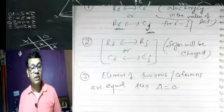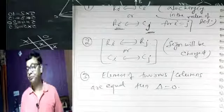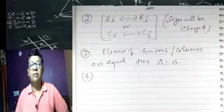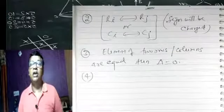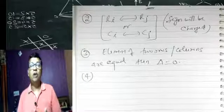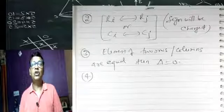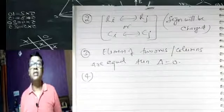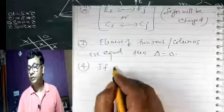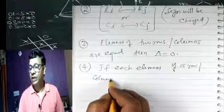Ab property number 4 se hum log start karenge. Teen properties aaj humne padhiyin, next hum log saare properties padhenge aur sawaal banaayenge. Determinant se ek sawaal zaroor rehta hai exam mein — teen row teen column par aapko command hona chahiye. Value nikaalana, jo properties bata raha hoon ye saare aapko yaad hona chahiye. Type each element — aur phir row ya column, dono ke liye baat main likh raha hoon.